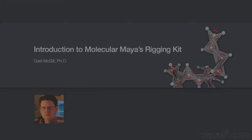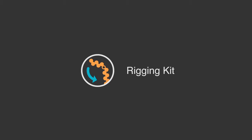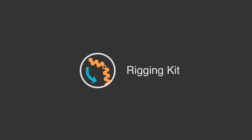This tutorial provides an introduction to the key features of Molecular Maya's rigging kit. Like other Molecular Maya kits, the goal is to streamline the modeling and animation of structurally accurate, simulation-ready macromolecules.